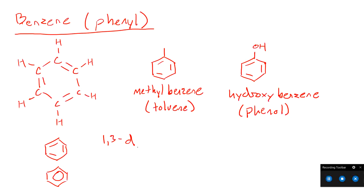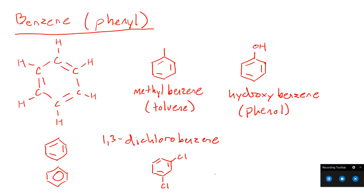For example, 1,3-dichlorobenzene: we draw our benzene ring, pick one carbon as carbon one and place a chlorine on it, then count around the ring to carbon three and place the second chlorine. Since all carbons are equivalent, we can go left or right around the circle — it's the same in both directions. That brings us to the end of this introduction to organic naming, which is the backbone of everything we'll do further in the organic chemistry chapter.